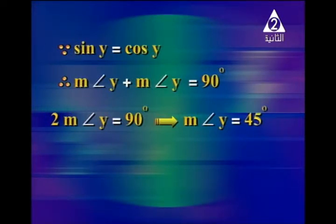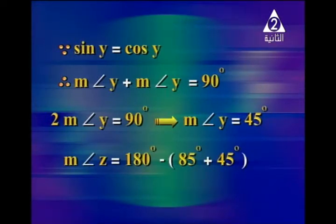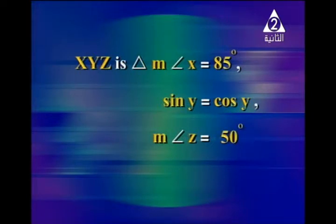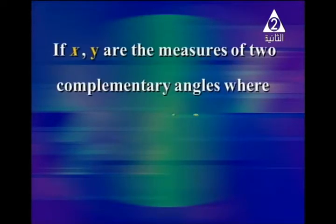Now with angle X equals 85 degrees and angle Y equals 45 degrees, we can find angle Z. It is 180 degrees minus (85 plus 45), which gives 50 degrees. So measure angle Z equals 50 degrees.